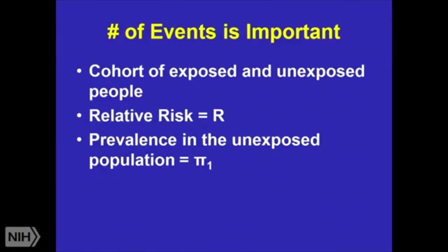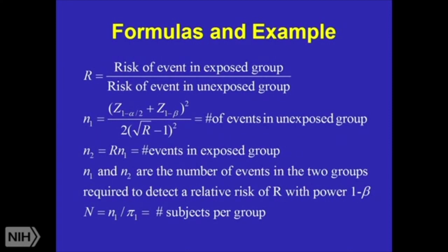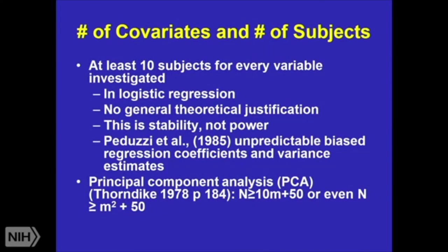When you're doing survival analysis and other types of analyses, you may have a cohort of those exposed and unexposed people. You have a relative risk that you're interested in. I know the prevalence in the unexposed population, and I need to figure out the number of events. So the risk of an event in the exposed group divided by the risk of the event in the unexposed group — back-calculate the number of events you think you're going to see. Calculate the number of events in the unexposed group, then in the exposed group, then calculate how many people you need to see those events.